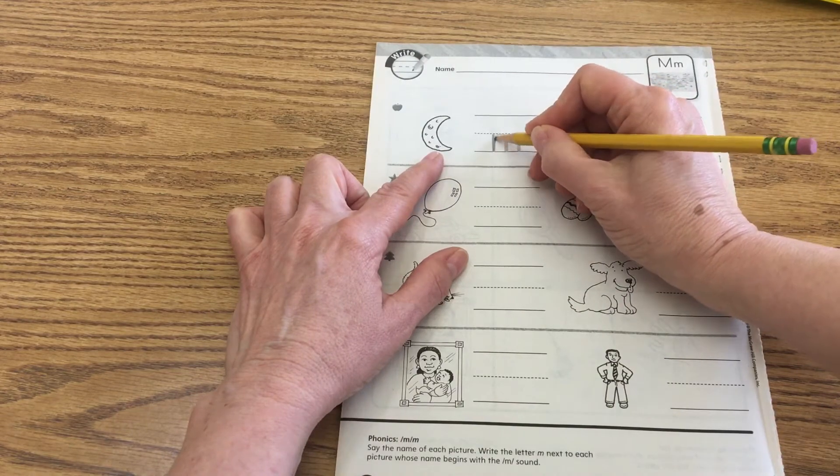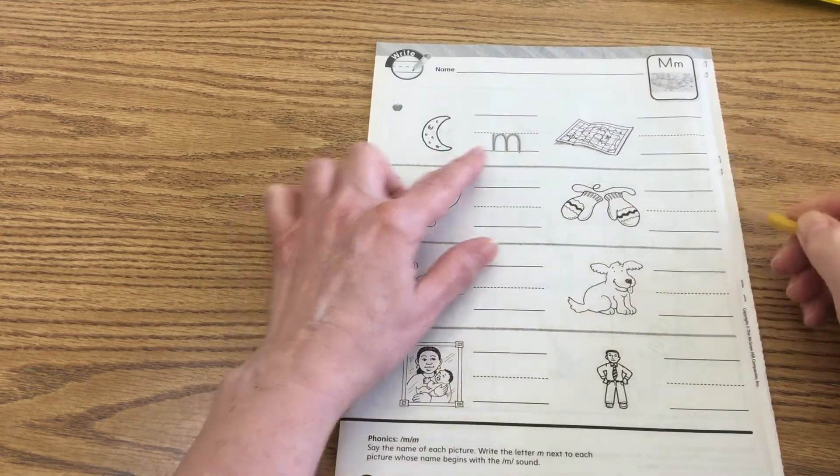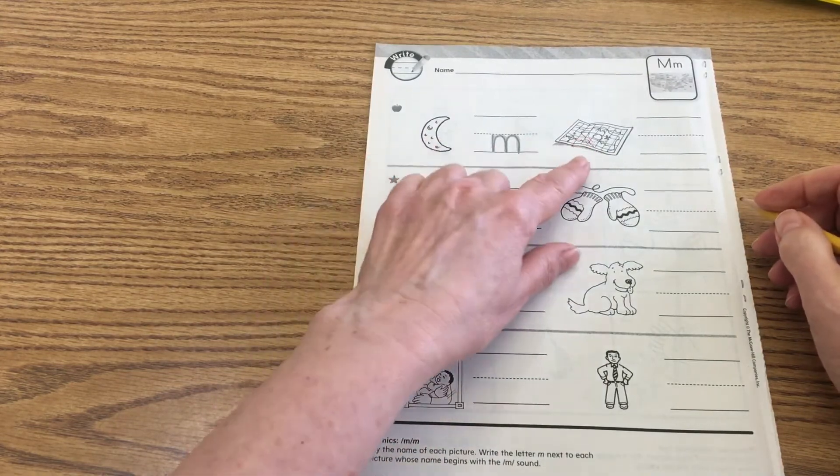Moon definitely starts with an mmm, so we can just trace that with our pencil. And we're writing our lowercase letters.